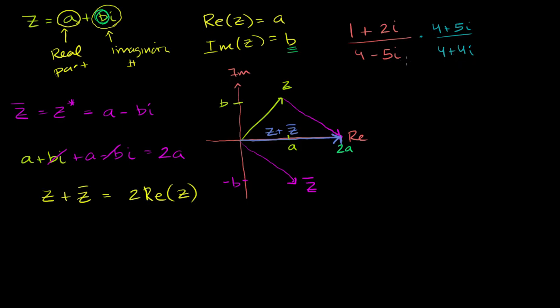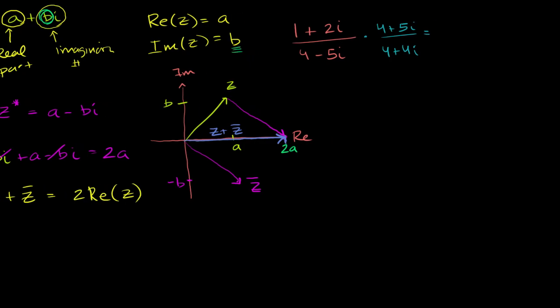But the reason why this is valuable is if I multiply a number times its conjugate, I'm going to get a real number. So let me just show you that here. So let's just multiply this out. So we're going to get 1 times 4 plus 5i is 4 plus 5i. And then 2i times 4 is plus 8i. And then 2i times 5i. That would be 10i squared, or negative 10.